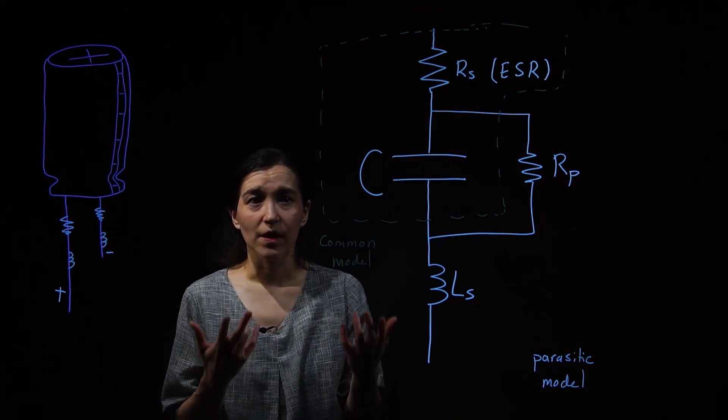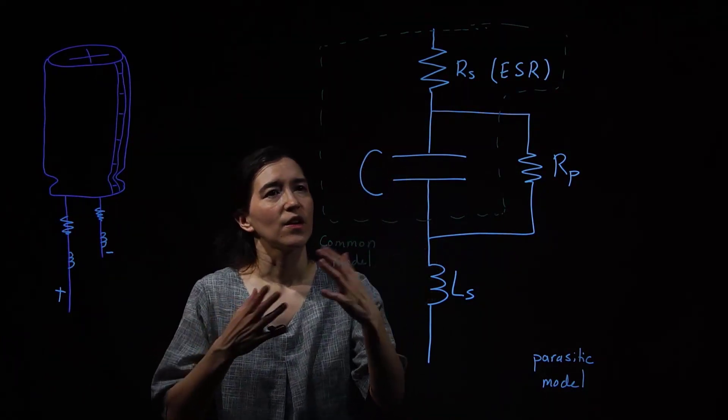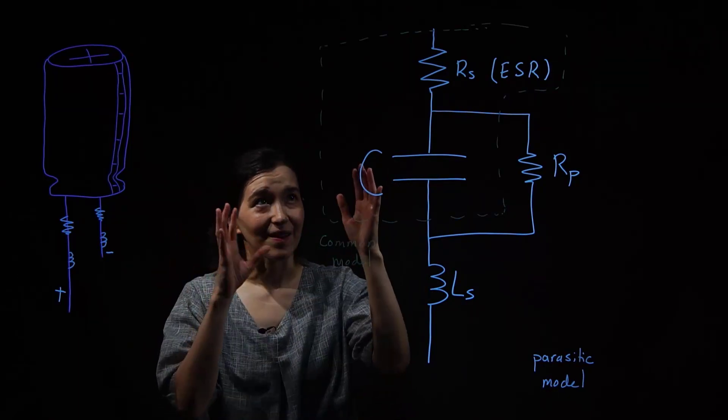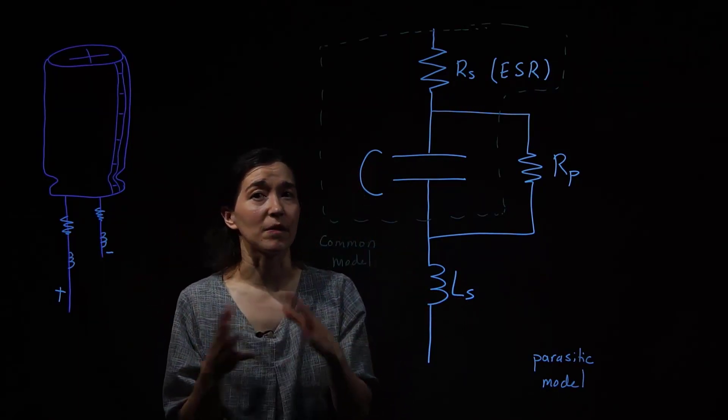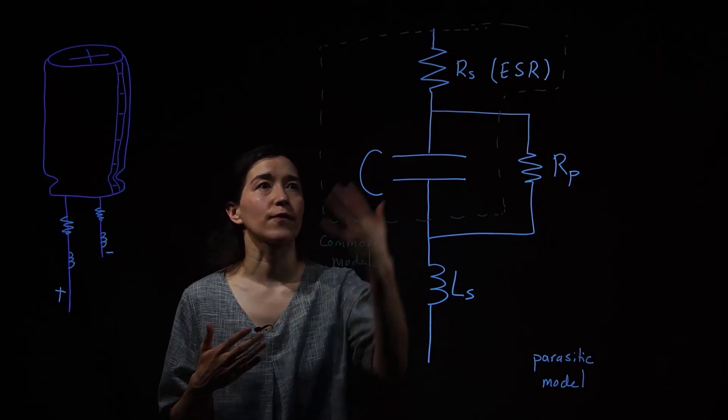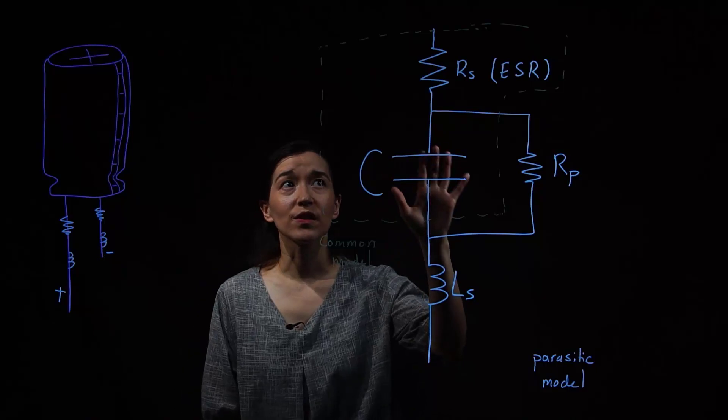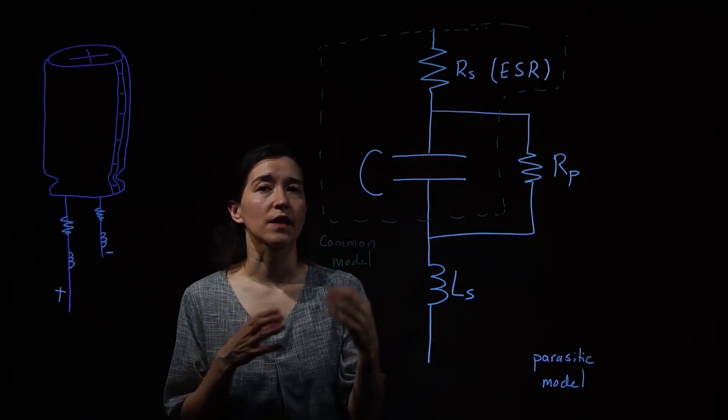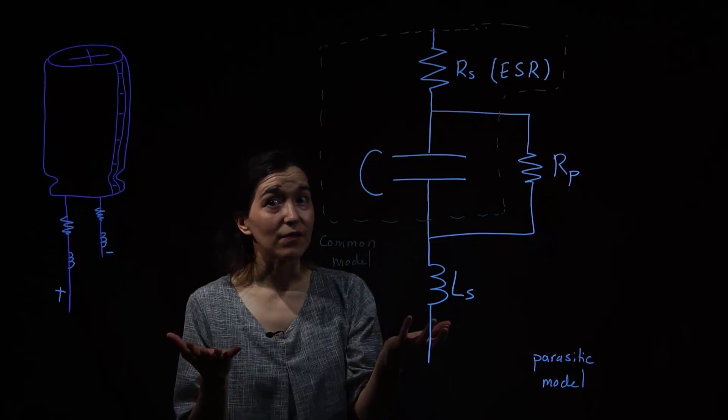When will this be important? When we're actually implementing a real system, we are going to see that the waveforms, the ideal waveforms, are not going to come out. They're always going to have some non-idealities. Those stem from these parts of this parasitic model. So the series resistance, this ESR, is very common because it will affect the output ripple of your DC-DC converter.